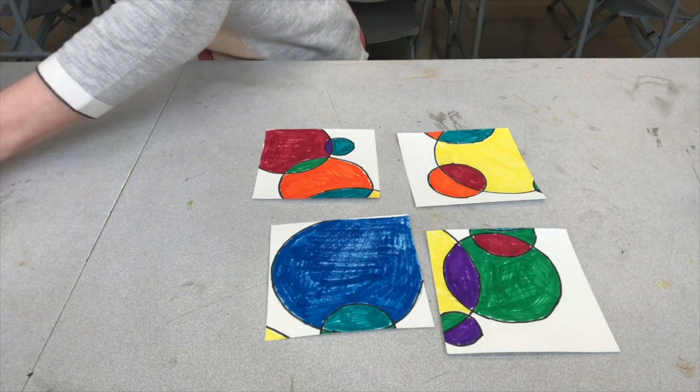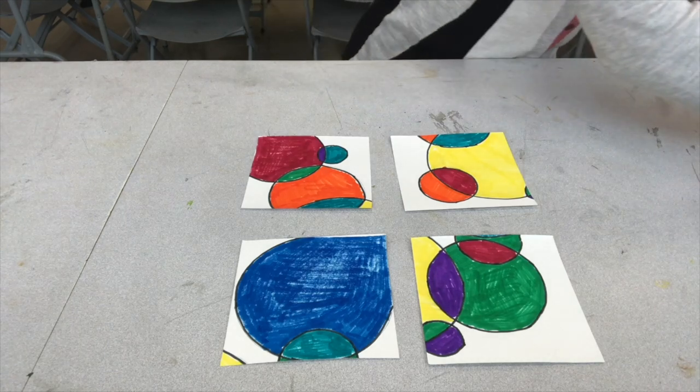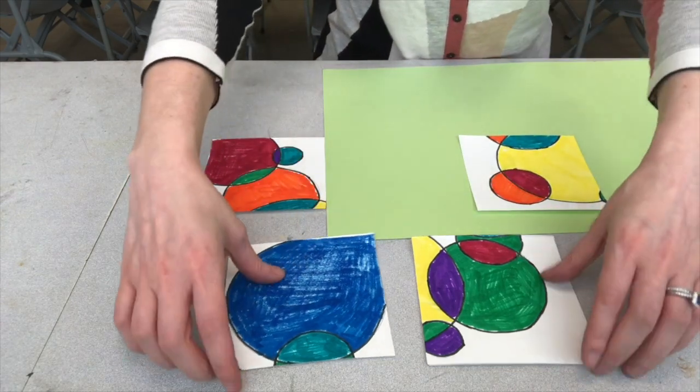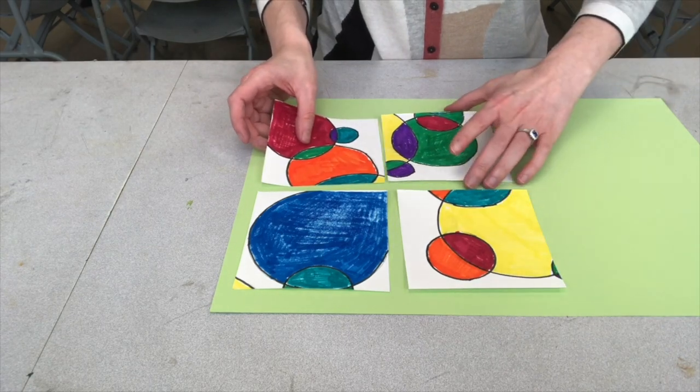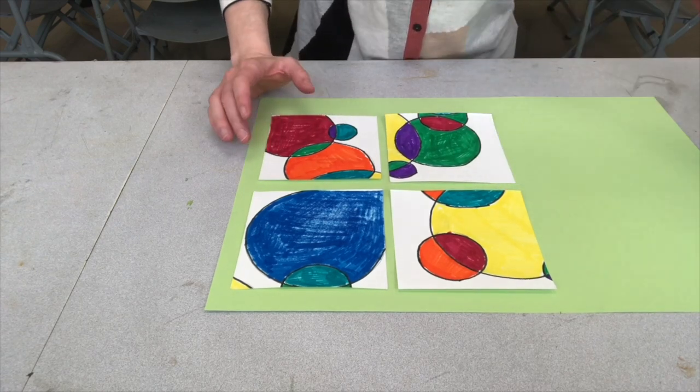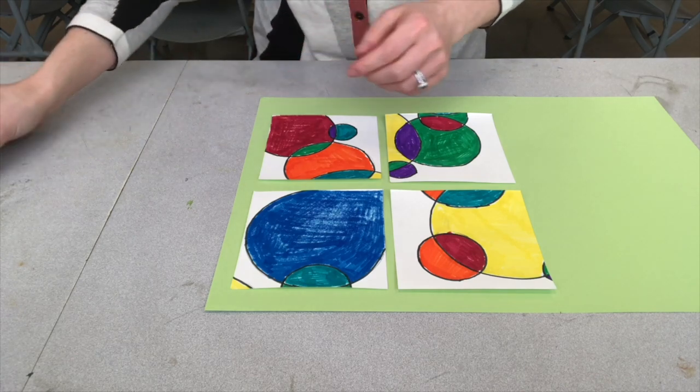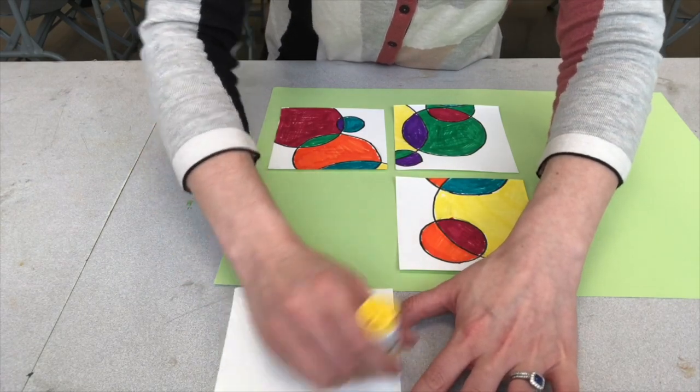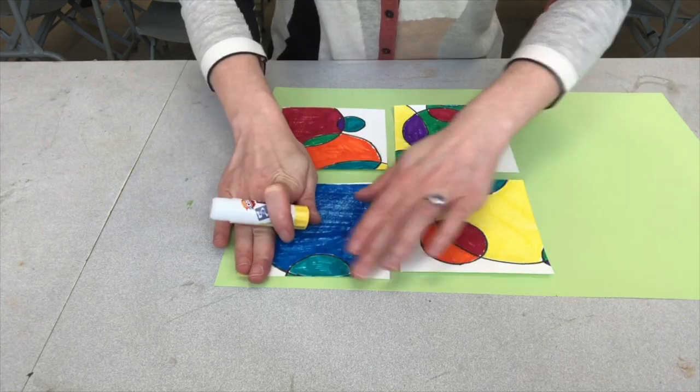And the final step is to mount your drawing onto a piece of construction paper. So you can choose what color you want. It depends on how you like your colors together. So I'm liking it on this green color. Now I'm going to use a glue stick to glue the four pieces in place. And you want to leave a little bit of a border around your composition. So I'm just going to flip this over. I'm going to add the glue stick and press it in place.